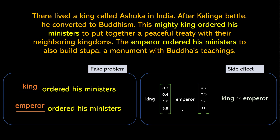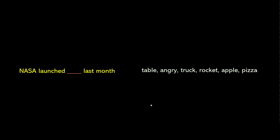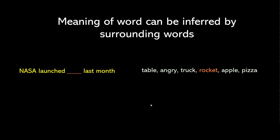Let's look into this problem further. If you have the sentence 'eating something is very healthy' and I ask you to fill in the missing word, most likely you'll say apple or walnut — because that's food and it's healthy. Pizza is also food but it's not healthy, so you won't pick that, and obviously eating a truck is not healthy. Similarly in another sentence the likely keyword will be 'rocket' — you're not going to say 'NASA launched pizza last month.' The meaning of a word can be inferred by surrounding words, also called context.